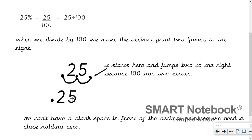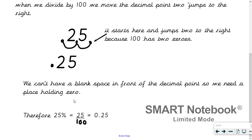Remember, we can't have a blank space in front of the decimal point, so we put a place-holding zero there. Therefore 25% equals 25 over 100, which equals 0.25. A lot of today's answers will be nought-point-something, so check whether there's a digit in front of the decimal point. You change your percentage to a fraction over 100 and then use that to find the decimal with two jumps. We can also start from the fraction and get the percentage — we don't always have to start with the percentage.